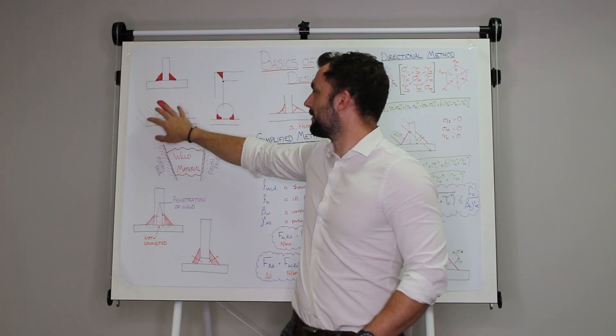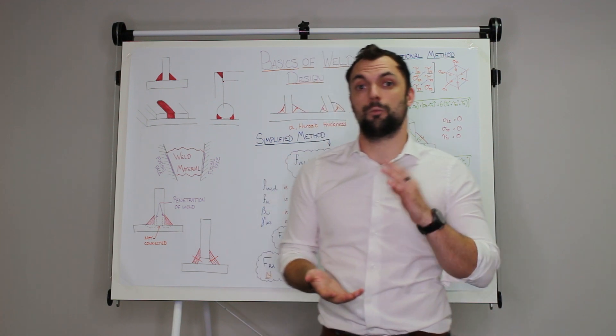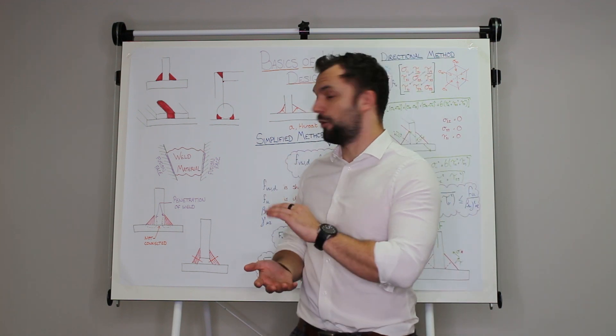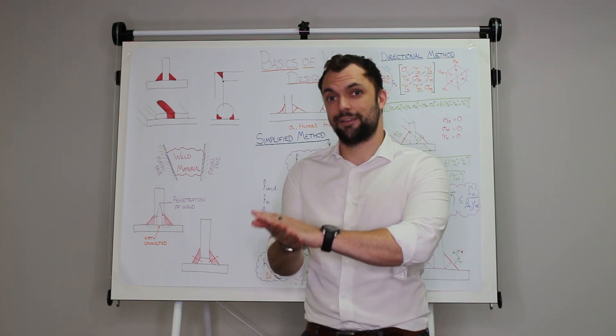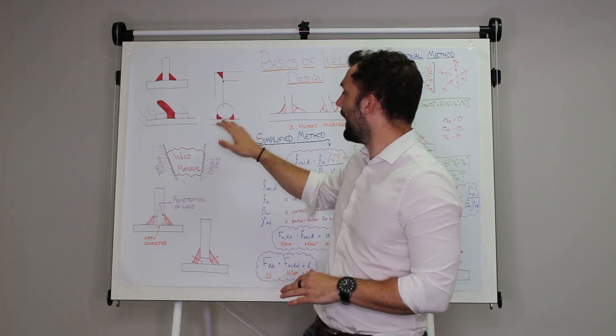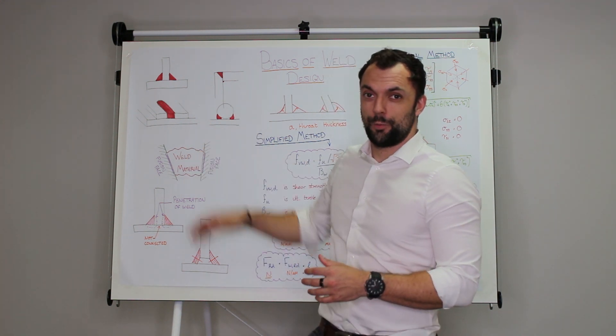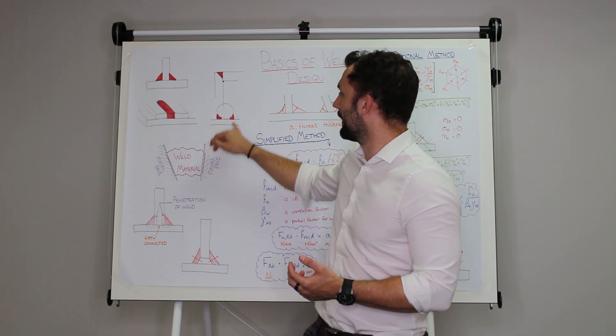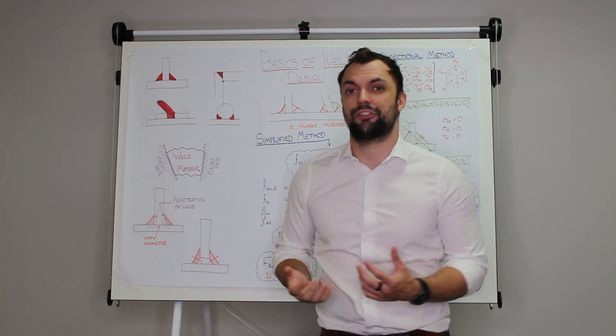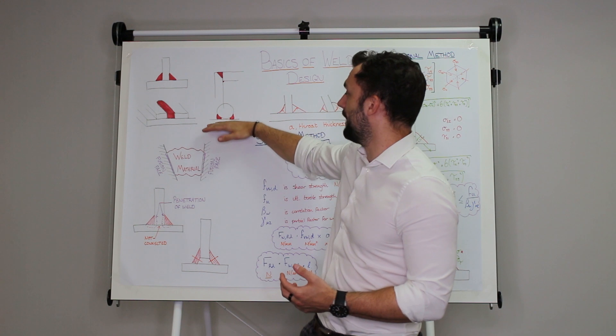The third type is a plug weld where you'll get a hole or a slot cut in one plate and then that slot will be filled with weld in order to connect it to a backing plate. And finally a flare groove weld which is weld that fills this flared groove between a circular hollow section or a round bar and a flat face.